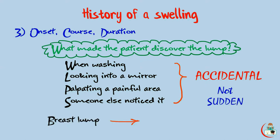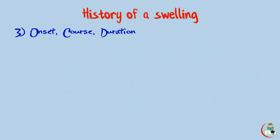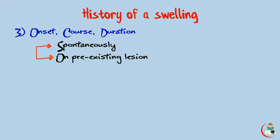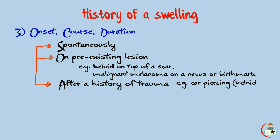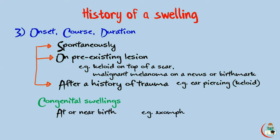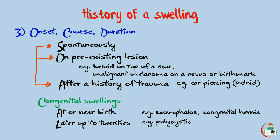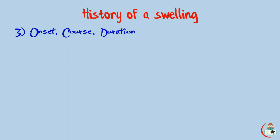One common presentation of a breast lump is that the patient found it on self-examination. In general, swellings either appear spontaneously or on top of a pre-existing lesion — for example, a keloid on top of a scar, or a malignant melanoma on top of a nevus or birthmark. A swelling may follow a history of previous trauma, like a keloid developing on top of ear piercing. Congenital swellings either appear at or near birth (e.g., exomphalos, congenital hernia) or may appear later even up to the age of 20s, like polycystic kidney, ankle cysts, and paraglossal cysts — all needing time for the cysts to be filled by fluids.